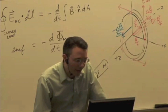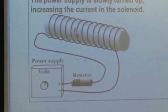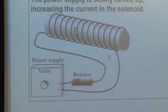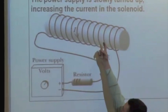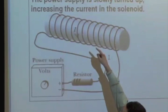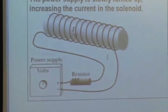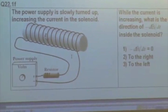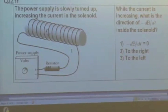Here's a power supply connected to a resistor and a wire wrapped around a piece of metal forming a solenoid — a coil of wire much longer than it is wide. When you turn the power supply on, conventional current flows toward us at the top of the solenoid and into the page at the bottom. You then crank up the variable power supply, slowly increasing the current in the solenoid. While the current is increasing, what's the direction of negative dB/dt inside that solenoid?